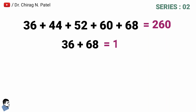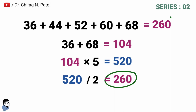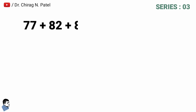36 + 68 = 104. Then multiply 104 by the total count of numbers in the group, which is 5. So 104 × 5 = 520. Finally, divide the previous answer by 2: 520 ÷ 2 = 260. That is the same answer calculated by the calculator.